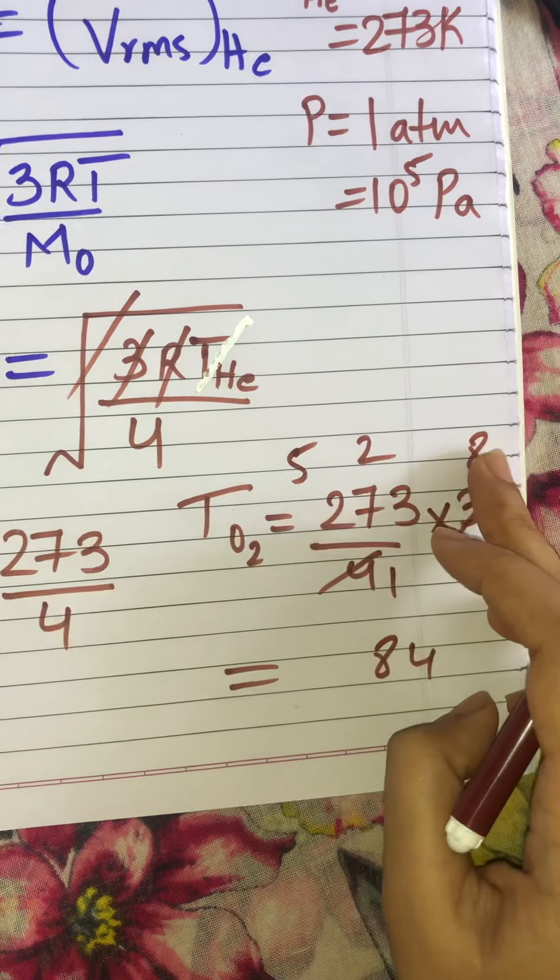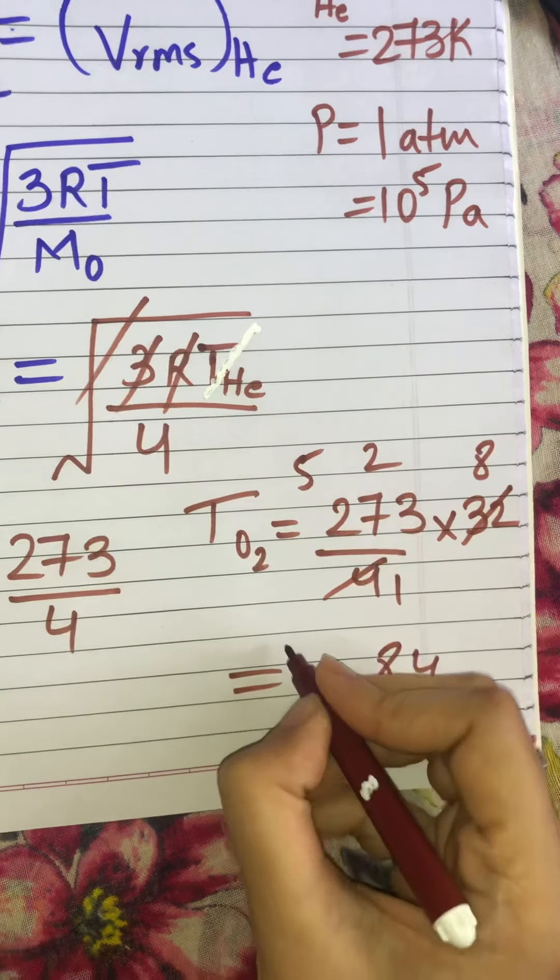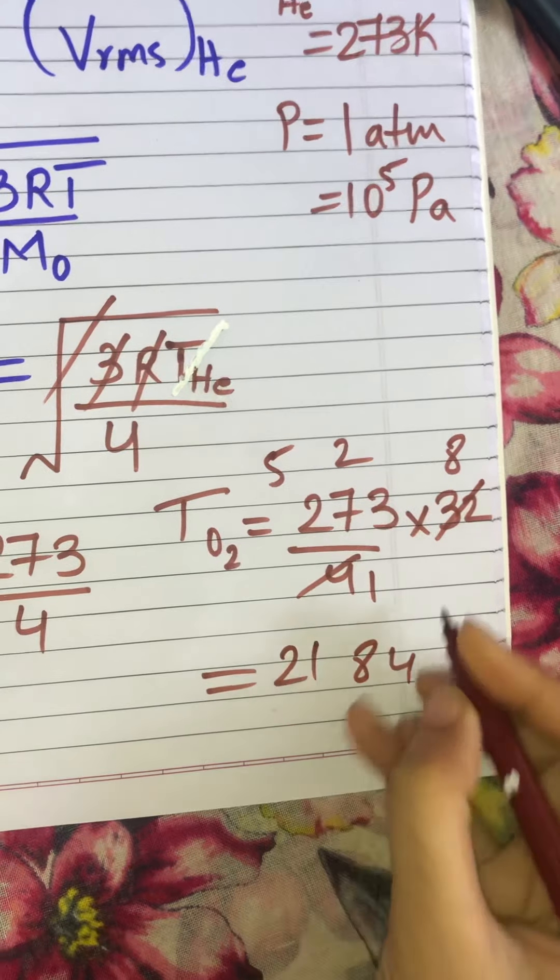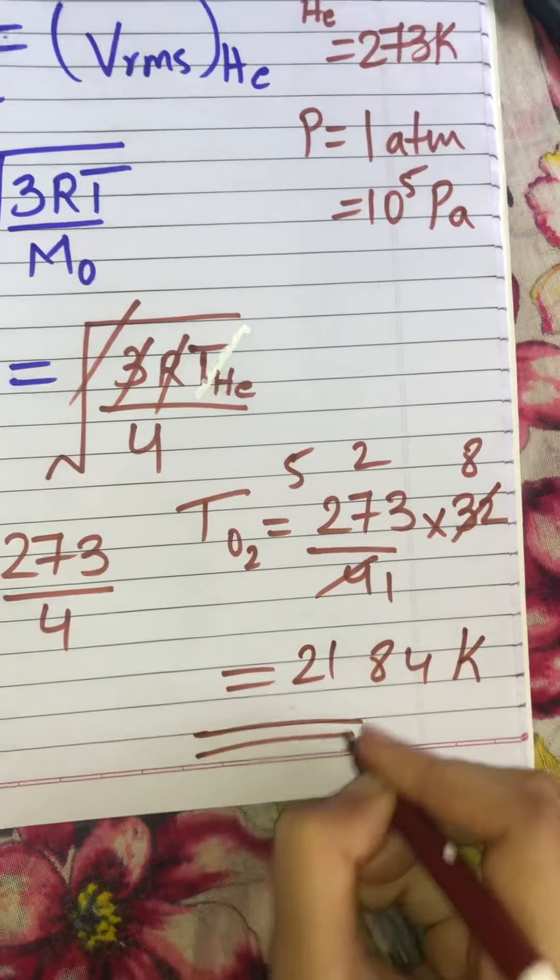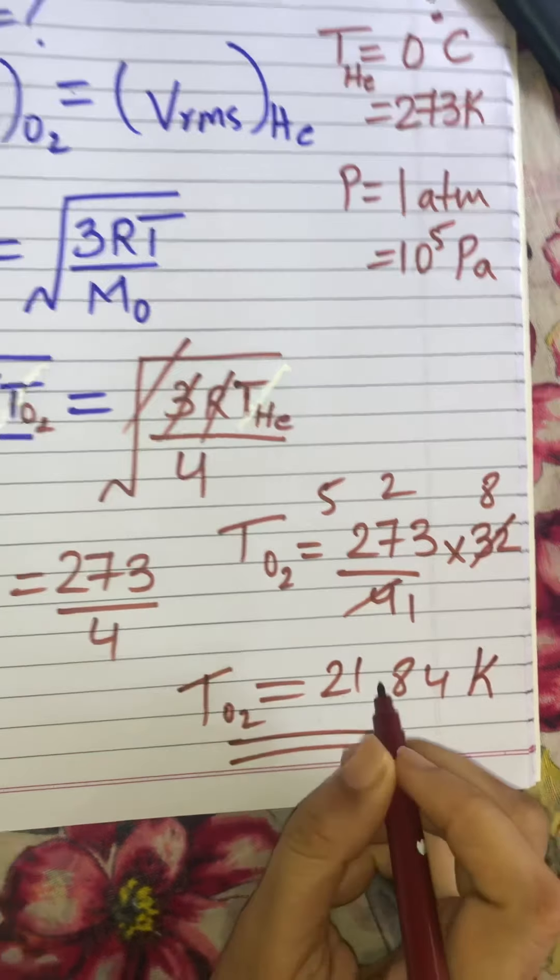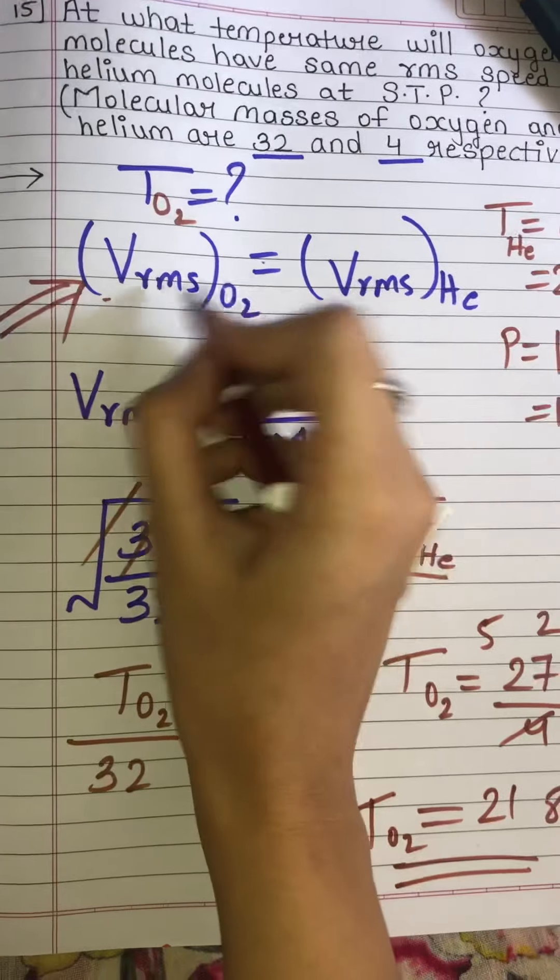Then, two eights are 16, 16 plus 5 is 21. So 2184 Kelvin is the temperature of oxygen at which this condition is valid.